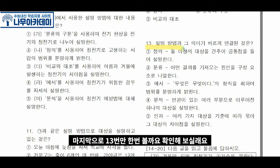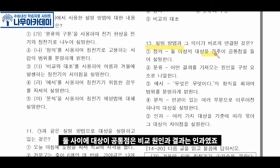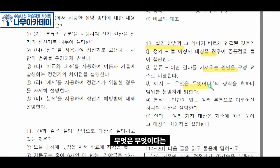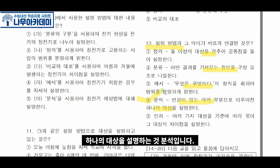마지막으로 13번만 한번 볼까요? 두 대상 사이의 공통점은 비교였죠? 원인과 결과는 인과였죠? 무엇은 무엇이다는 정의였죠? 여러 부분으로 나누는 것이 아니라 하나의 대상을 설명하는 것은 분석이죠? 따라서 정답은 4번입니다. 차이점은 대조였죠?